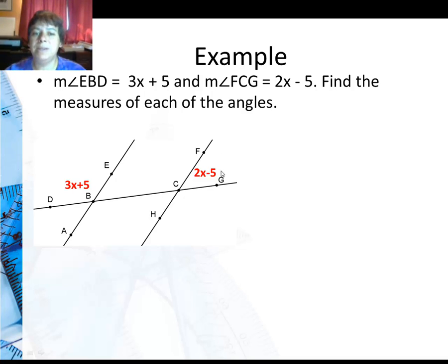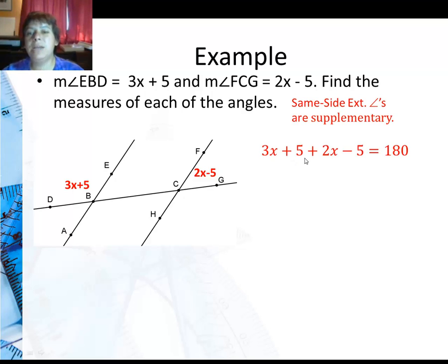Being same side exterior, then that means they are supplementary, which means I should add the two angles together and set it equal to 180. So 3x plus 5 plus 2x minus 5 equals 180.